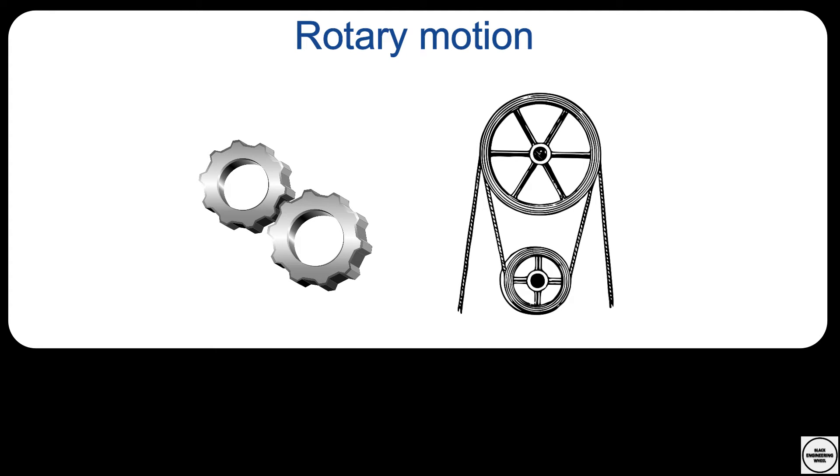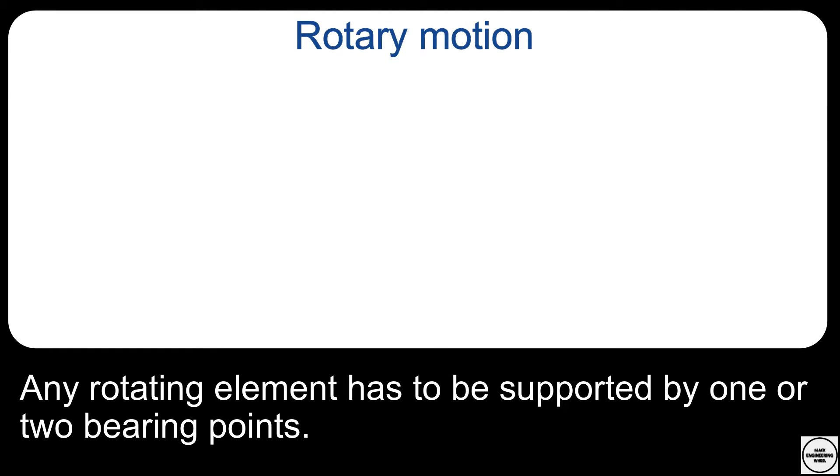These rotating elements have a lot in common. Any rotating shaft has to be supported at a bearing point or most commonly two bearing points.